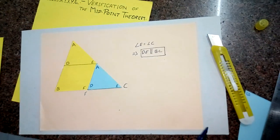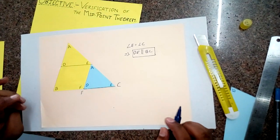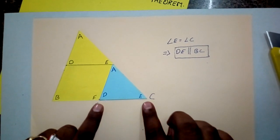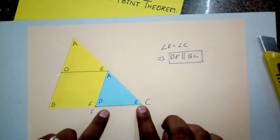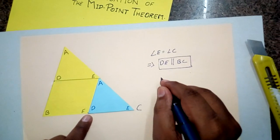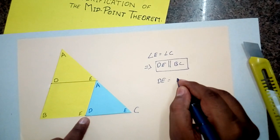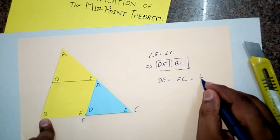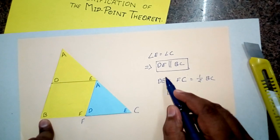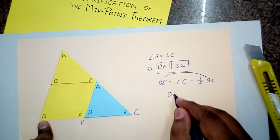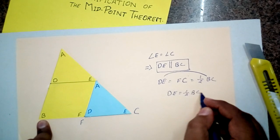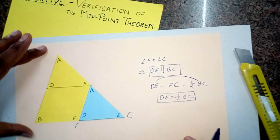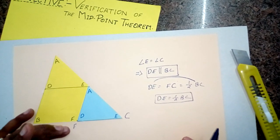Now coming to the second part: DE will be half of BC. We obtained the midpoint F of side BC, and DE is overlapping exactly that half portion of BC — meaning DE equals FC. Since FC is half of BC, we can write DE equals half of BC. So DE is half of BC. In this way I have verified the theorem that the line segment DE joining the midpoints of two sides of triangle ABC is half of the third side and parallel to the third side.